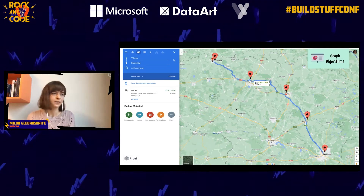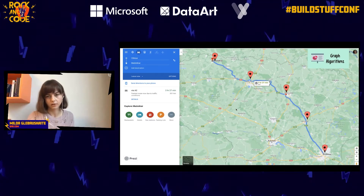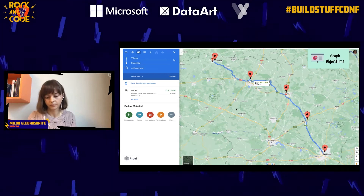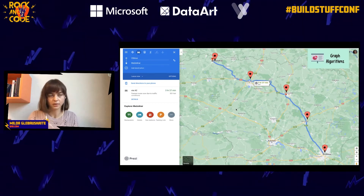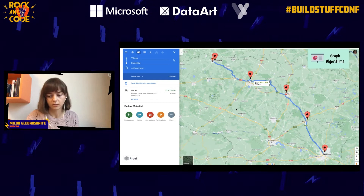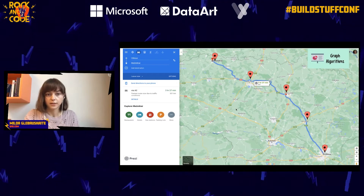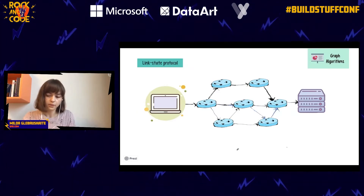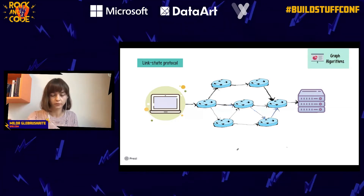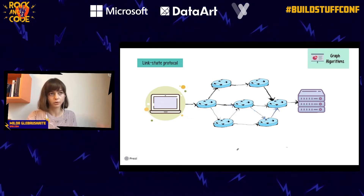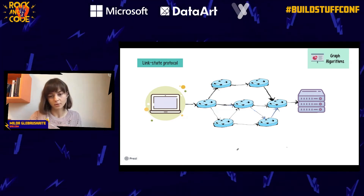I must mention that Dijkstra's algorithm isn't the algorithm Google actually uses. I read that they may use the A* algorithm, which could be called an extension of Dijkstra's, used for more complex scenarios. I'd also expect that Google uses some algorithm they created themselves. Dijkstra's algorithm is also relevant beyond physical maps: it's used in the link-state protocol, which is part of the routing protocol, which is part of the Internet Protocol — so this is how we receive our internet connection.